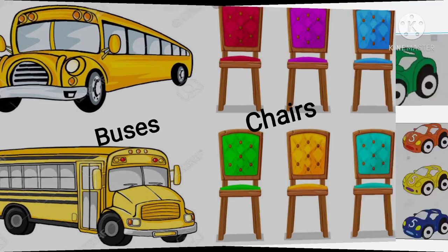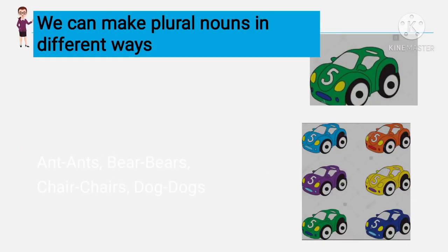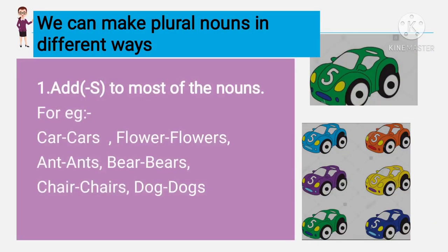Now we will learn how we can make plurals in different ways. First, add -s to most nouns. For example: car → cars, flower → flowers, aunt → aunts, chair → chairs, dog → dogs. Car is also shown in the picture: car and cars.